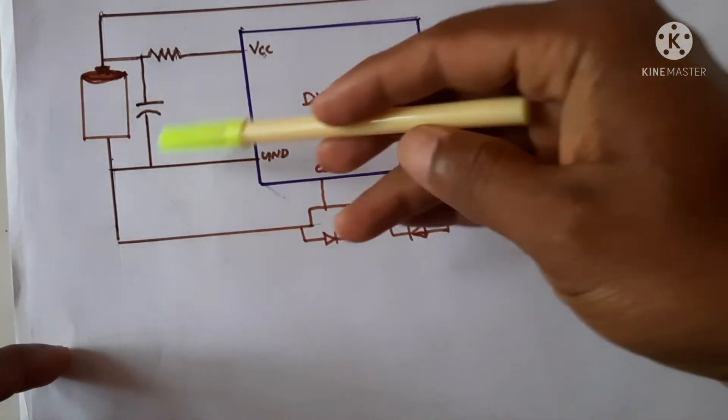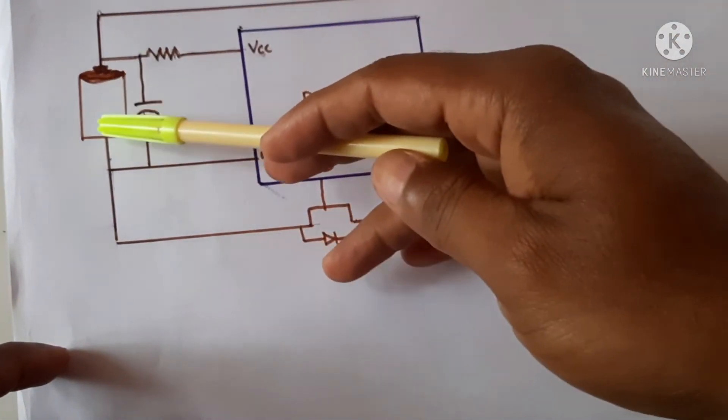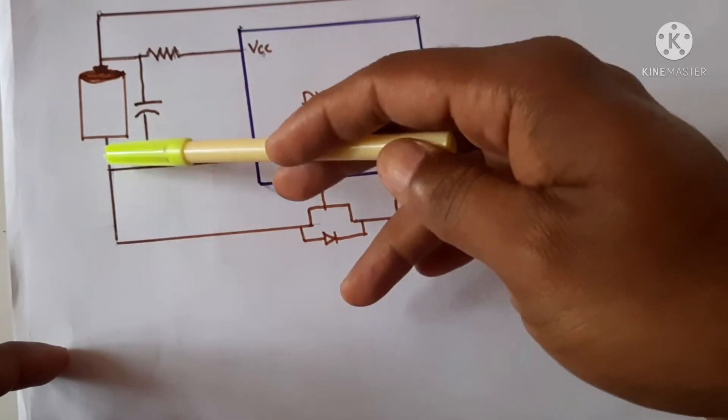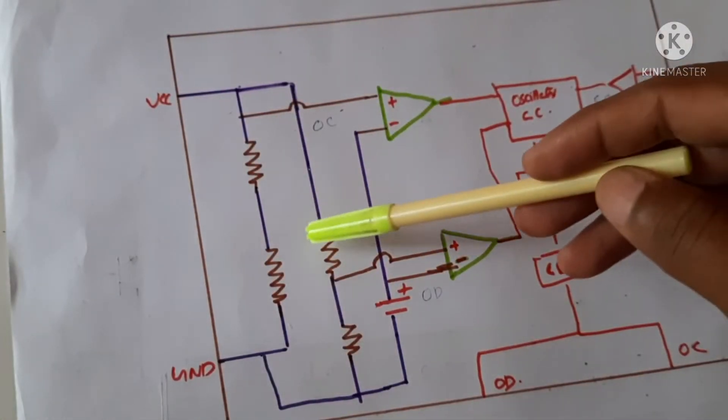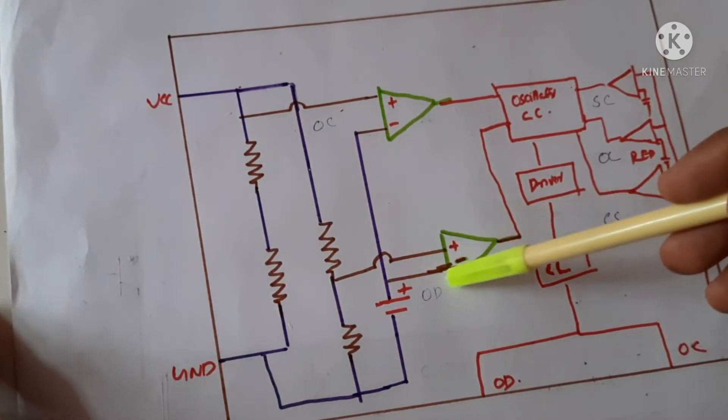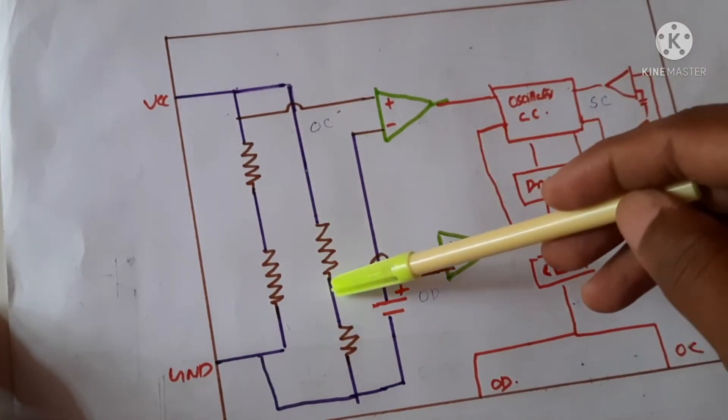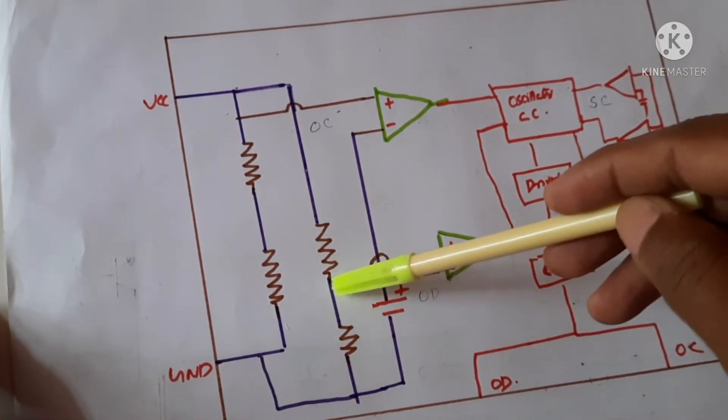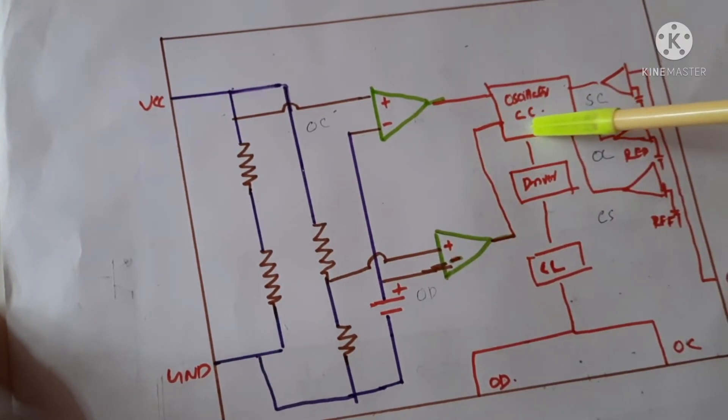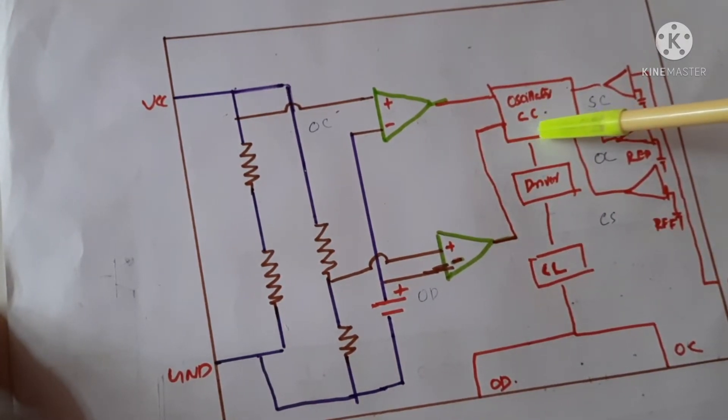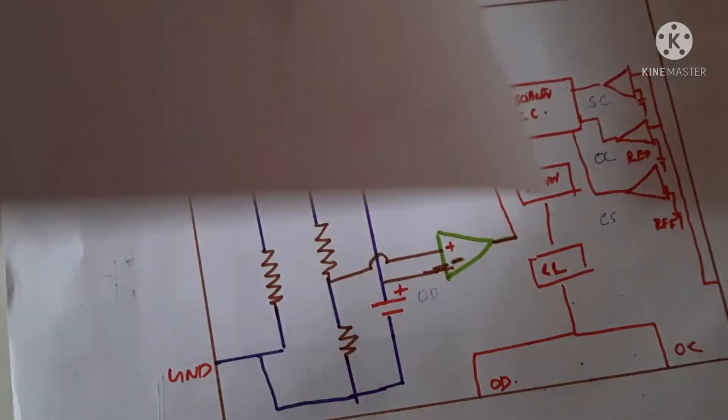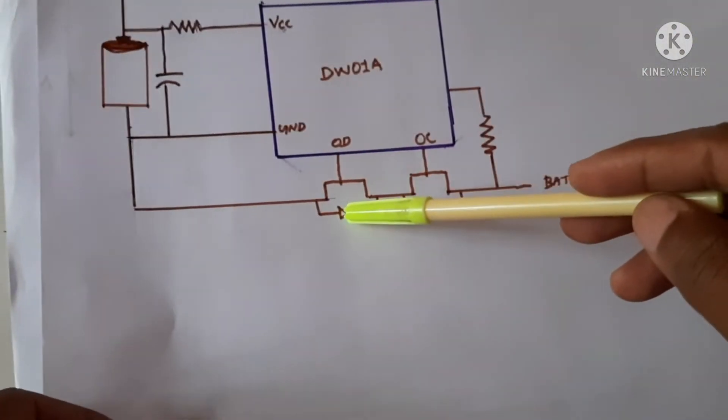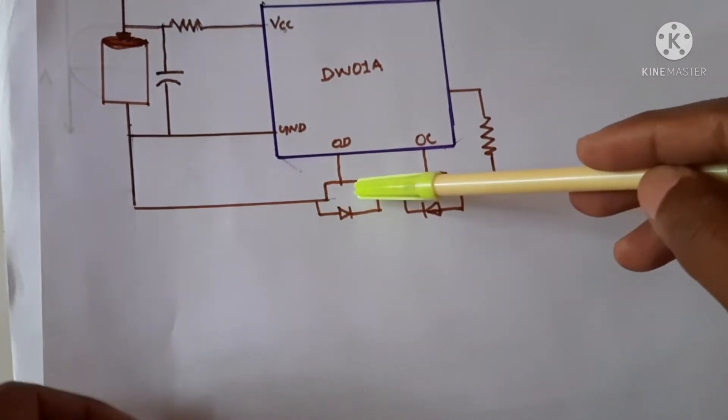Now another feature is over discharge. It will not allow the battery to discharge below 2.4V. There is a comparator when the voltage at this point falls below 2.4V that signals the battery voltage is less than 2.4V so the over discharge path will turn off. Now this over discharge MOSFET will be off.